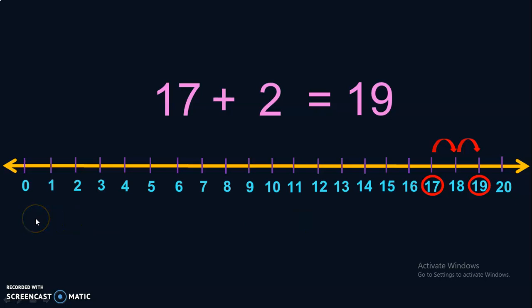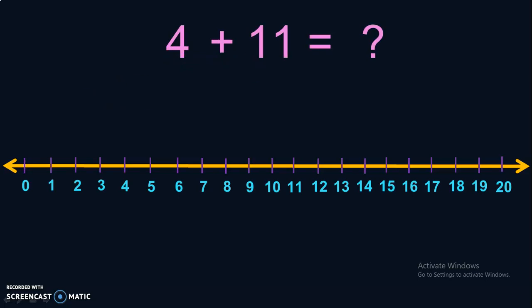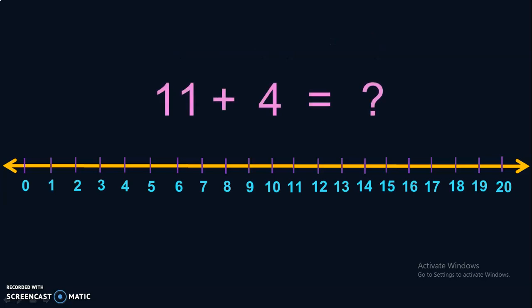Let us do one more example to understand this better. We have the number line with numbers 0 to 20. Add 4 plus 11. You can do it as 11 plus 4 because 11 is the bigger number. Identify 11 in the number line, then make 4 jumps: 1, 2, 3, 4. You arrive at the number 15. So, 11 plus 4 is equal to 15.